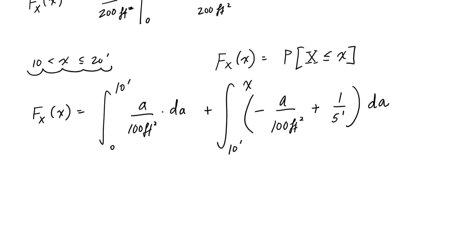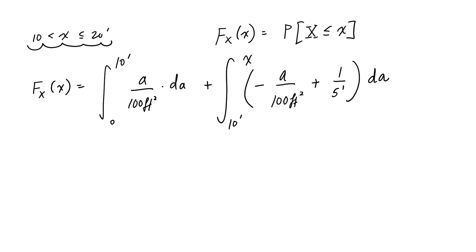And now I'm going to integrate this. I will tell you right now, when you integrate this portion and evaluate it from 0 to 10, this is going to be 0.5. That's that shaded triangle that we had here. And then I'm going to integrate the second part right here. So this is going to be minus a squared over 200 feet squared plus a over 5 feet. And this is going to be evaluated from 10 feet to x.